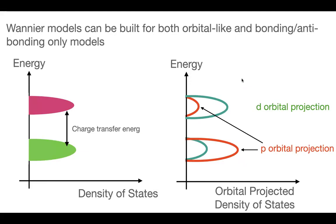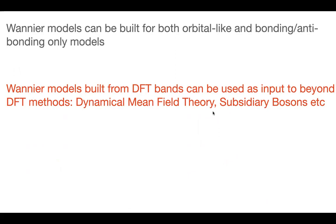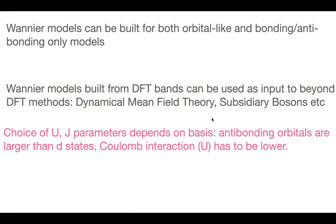You can build Wannier functions in different ways depending on what you want to model; a full p-d model is usually much more expensive. The typical computational workflow is: density functional theory, then build the Wannier model Hamiltonian, then add correlations — via DMFT, slave bosons, etc. When comparing U and J values between papers, you can only compare them if you are actually using the same orbitals. An anti-bonding orbital is much larger, so a low-energy picture uses a lower U.